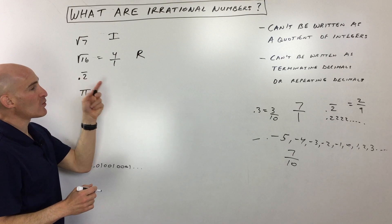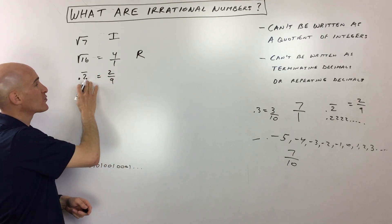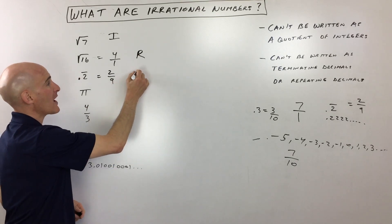0.2 repeating, that's the one that we did over here earlier. That's actually a ratio of an integer divided by an integer. It's a repeating decimal, so that's actually going to be rational.